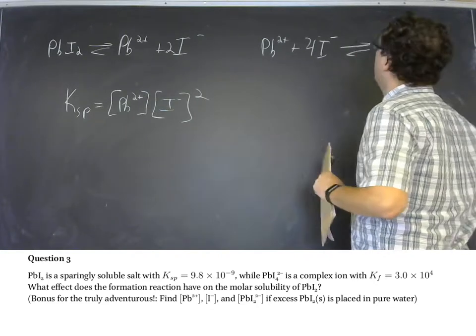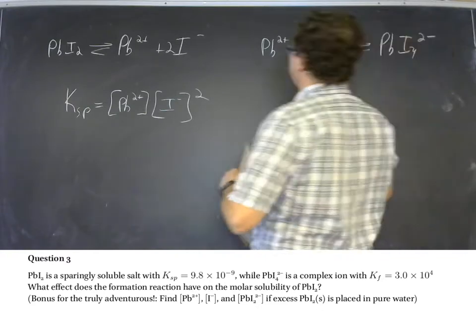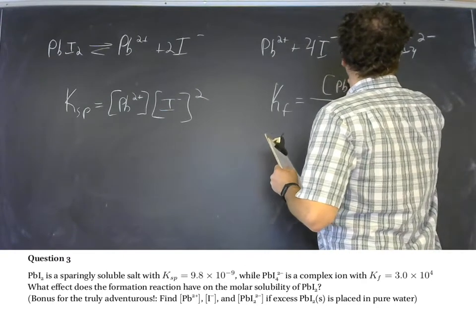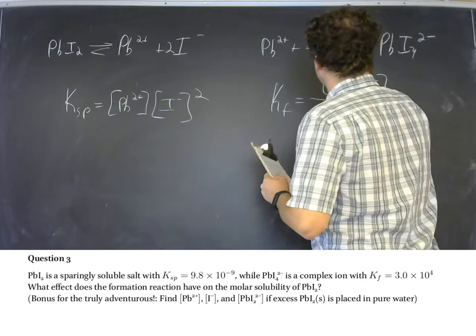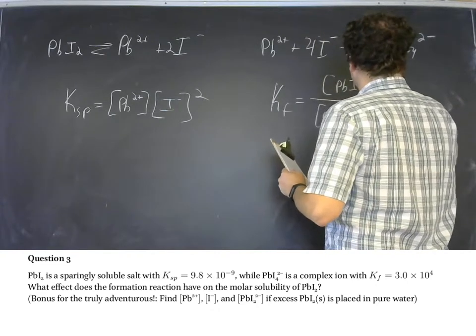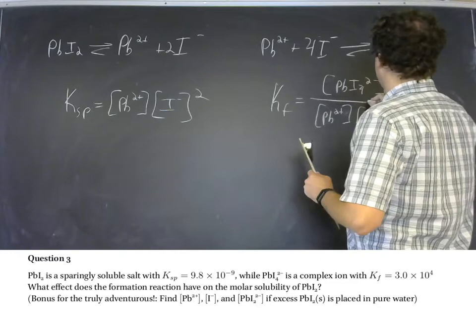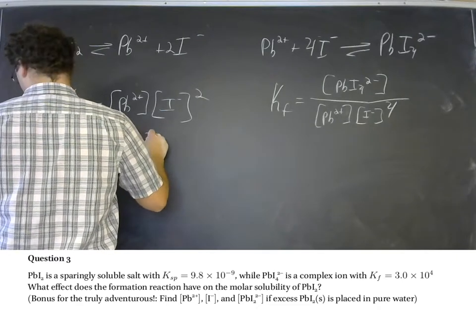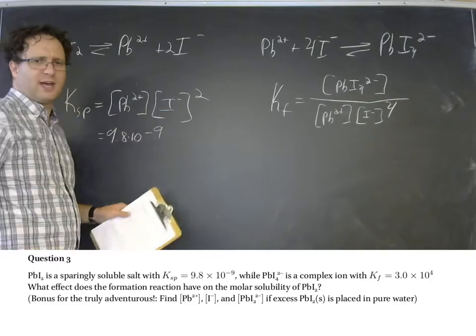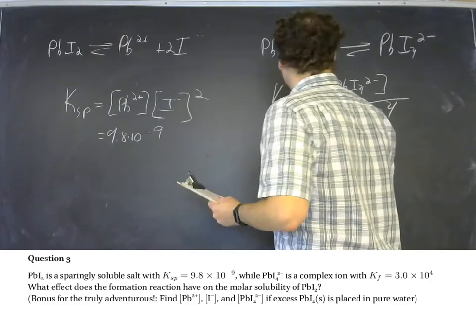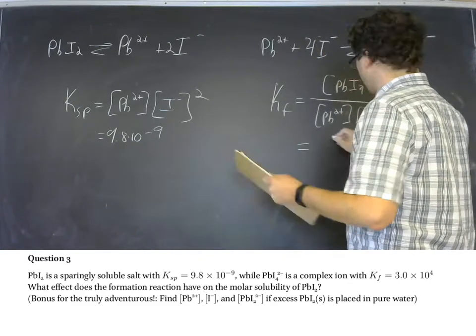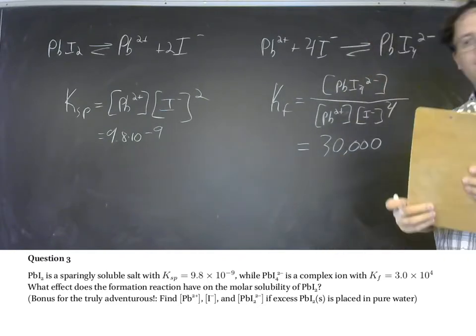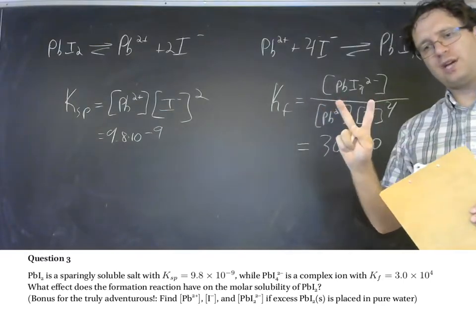And so you'll have solubility product where Ksp is equal to the Pb2+ and the I- squared. And you could calculate the molar solubility of lead iodide just like we've done before. However, lead 2+ ion and I- ion can also further participate in complexation chemistry. And so we can have Pb2+ plus 4I- in equilibrium with PbI4 2-. And this is going to have a Kf equal to concentration of PbI4 2- over the concentration of Pb2+ and the concentration of I- raised to the fourth power. And Ksp is small, 9.8 times 10 to the negative ninth. So there won't be very much lead and iodide in solution. But Kf is decently large. It's 30,000.